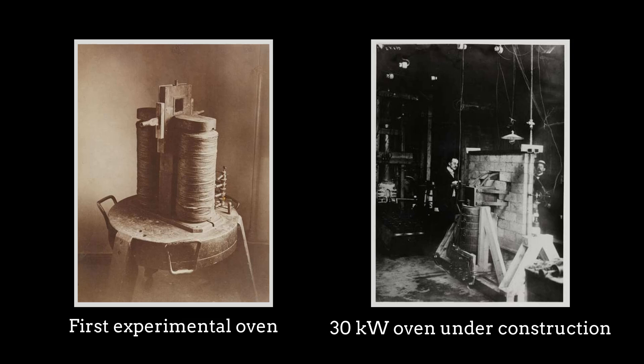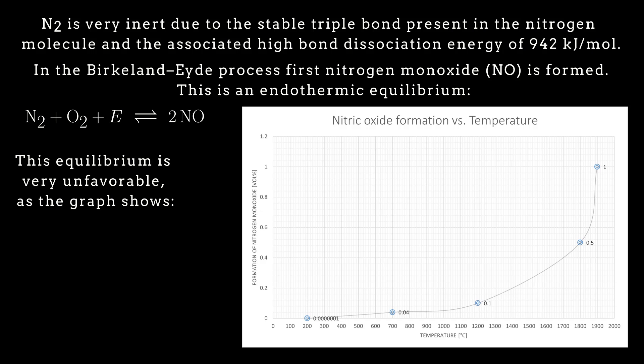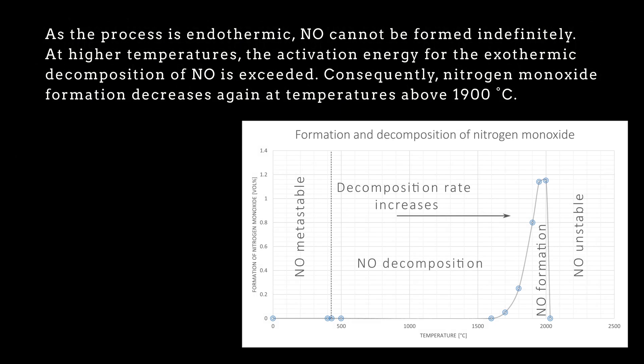Before we start building a fully automatic and programmed Birkeland-Eyde device, let's first take a closer look at what actually happens here chemically. As can be seen here, arc temperatures above 1900 degrees Celsius are rather counterproductive, which is remarkable.